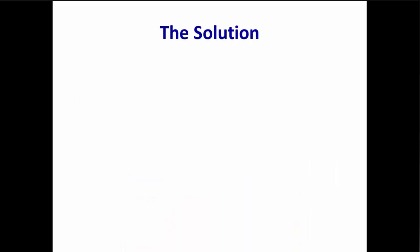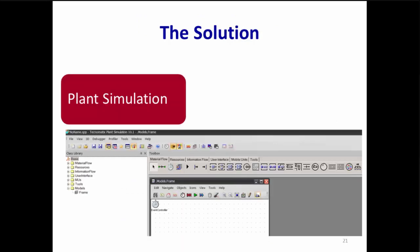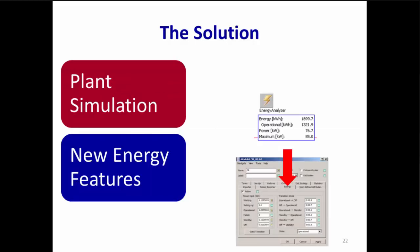The solution to these problems has two ingredients. First, dynamic simulation modeling of systems using a tool such as Siemens Technomatix Plant Simulation software provides a powerful virtual environment to test and improve a system's design and operations to address traditional optimization issues such as maximizing throughput, minimizing inventory and buffers, and minimizing labor. Second, while Plant Simulation always provided a powerful engine to build, analyze, and optimize your processes, the new energy features recently added to PlantSim now let you simulate energy consumption and analyze and optimize energy efficiency.